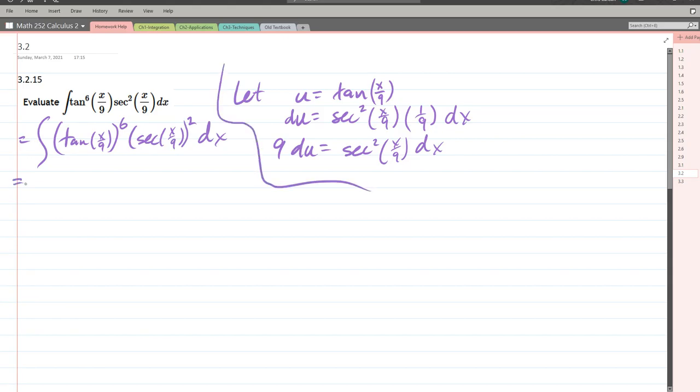Now we can make our substitution. We have the 9 constant, our u to the sixth, and secant squared of x over 9 dx gets substituted for du. I've already accounted for the 9, so we're just going to have a du here. Apply the anti-power rule.